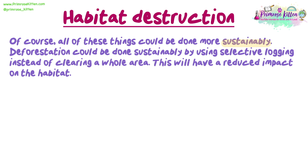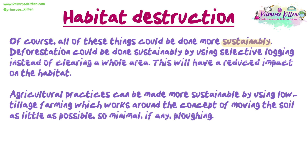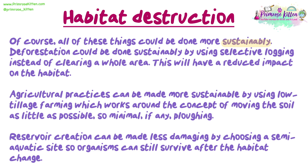Of course, all of these things could be done more sustainably. Deforestation could be done sustainably by using selective logging instead of clearing a whole area, which will have a reduced impact on the habitat. Agricultural practices can be made more sustainable by using low-tillage farming, which works around the concept of moving the soil as little as possible — minimal if any ploughing. Reservoir creation can be made less damaging by choosing a semi-aquatic site so organisms can still survive after the habitat change.